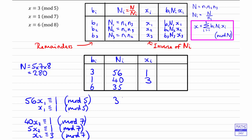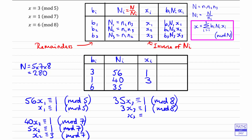For the last inverse, we need 35·x3 ≡ 1 mod 8. Since 35 mod 8 = 3, we need 3·x3 ≡ 1 mod 8. Trying values: 3×1=3, 3×2=6 — neither works. But 3×3=9, and 9 ≡ 1 mod 8, so x3 = 3. That's the value that goes in our table.